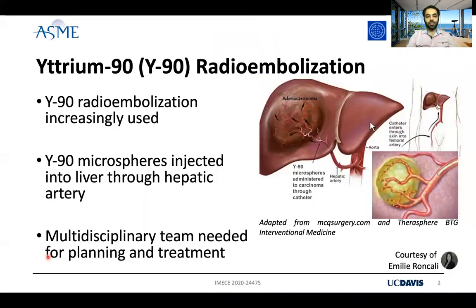Yttrium-90 radioembolization is a method that is increasingly used for advanced liver cancer, in which yttrium-90 microspheres are injected into the hepatic arterial tree to target the tumor internally.